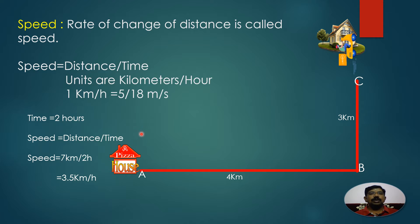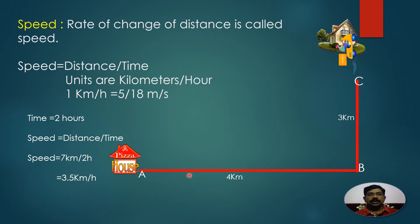Let us assume the time taken to reach C from A is 2 hours. Speed is equal to distance divided by time - it is defined as the rate of change of distance. In this animation, the speed of the fidget boy is 3.5 kilometers per hour, because he travels 7 kilometers in 2 hours, so the distance traveled in unit time is 3.5 kilometers per hour.